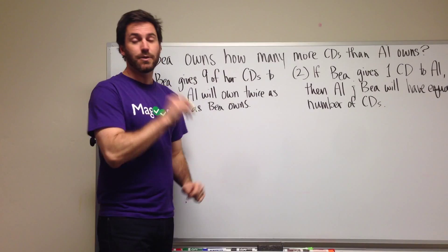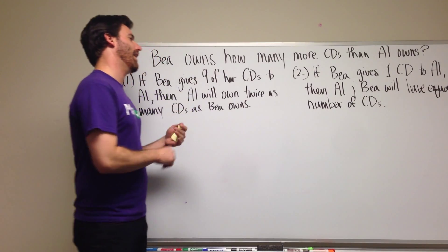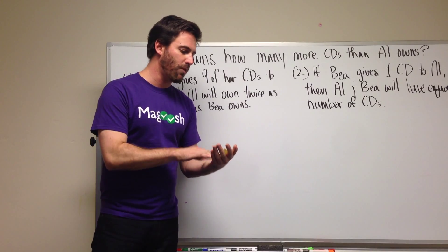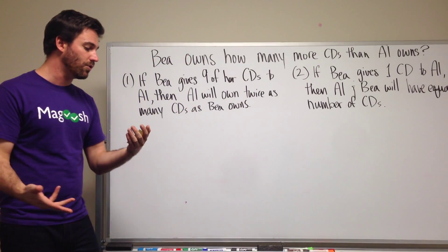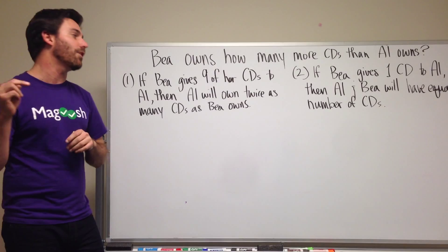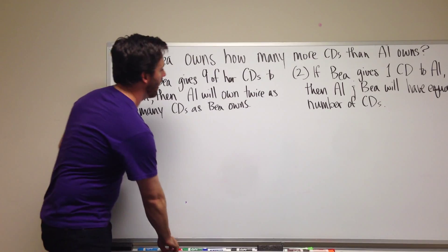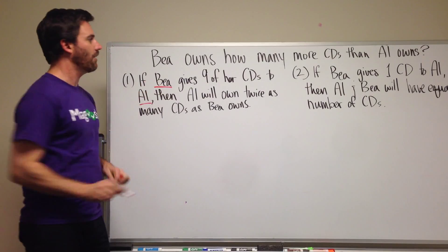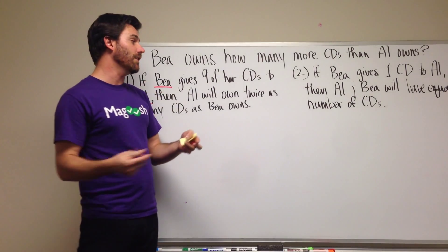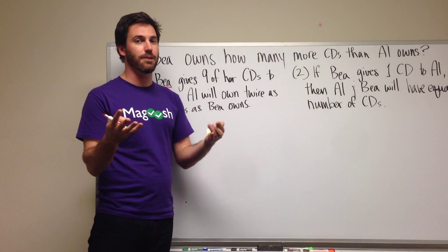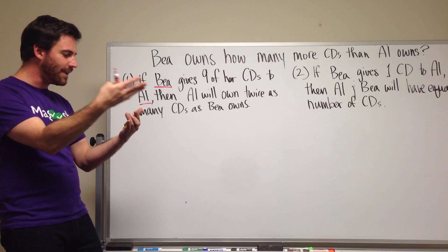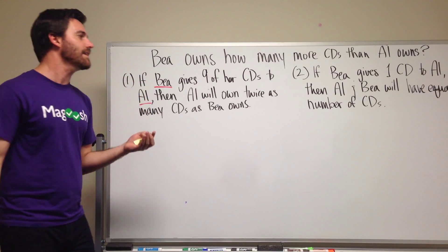Let me read the student's question. The student wrote in and said, well both statement one and two give us two variable equations, which is great to notice. We're dealing with two people here, Bae and Al, and that's going to give us two equations that have two variables. The student says, how is it that B is the correct answer and not C?